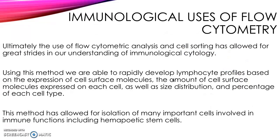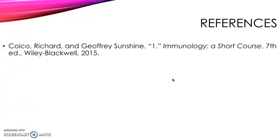The use of flow cytometric analysis and cell sorting has allowed for great strides in our understanding of immunological cytology. Using this method, we are able to rapidly develop lymphocyte profiles — those are the B and T cells — based on the expression of cell surface molecules, the amount of cell surface molecules expressed on each cell, as well as size distribution and percentage of each cell type. This method has also allowed for isolation of many important cells involved in immune functions, including hematopoietic stem cells.